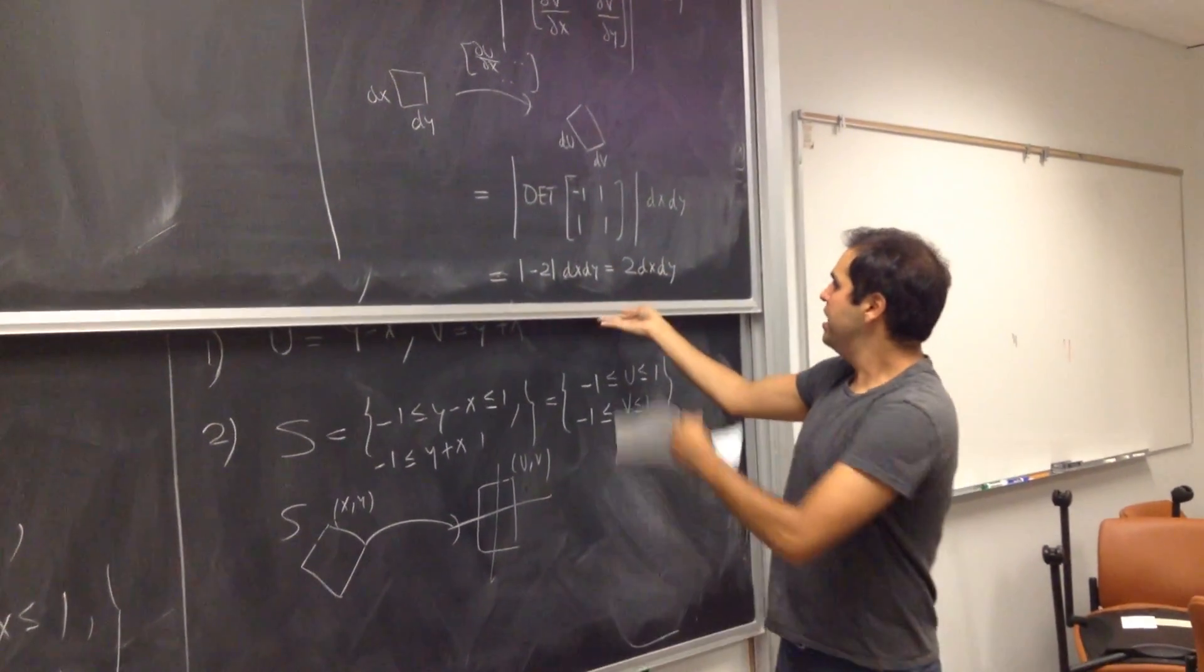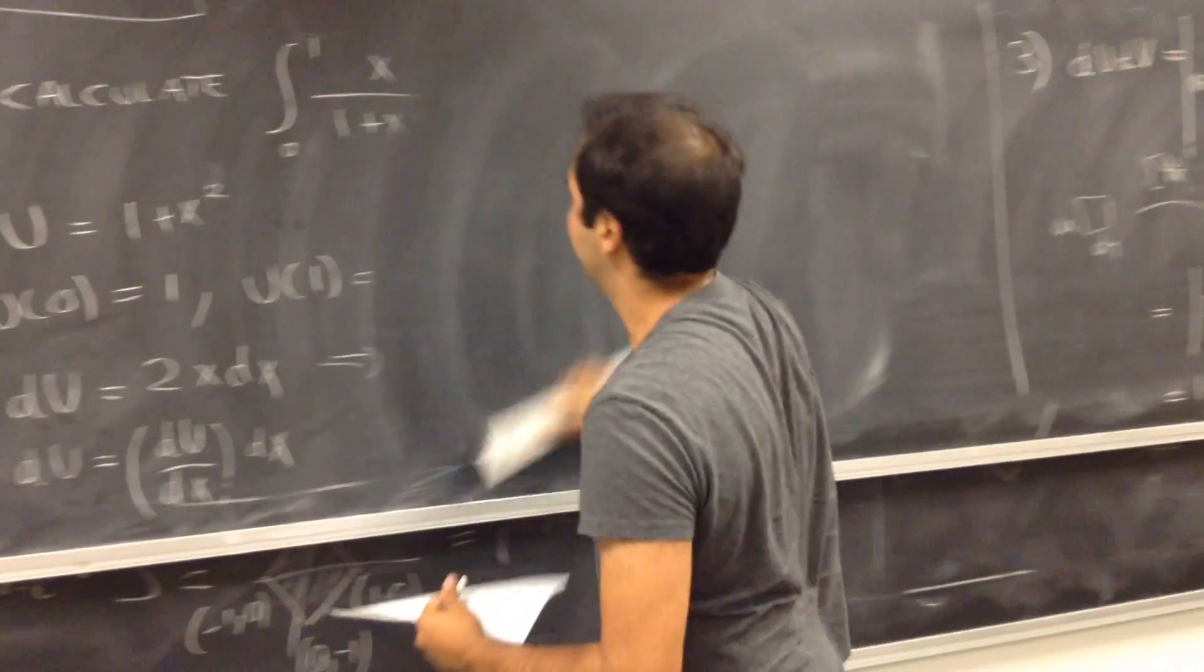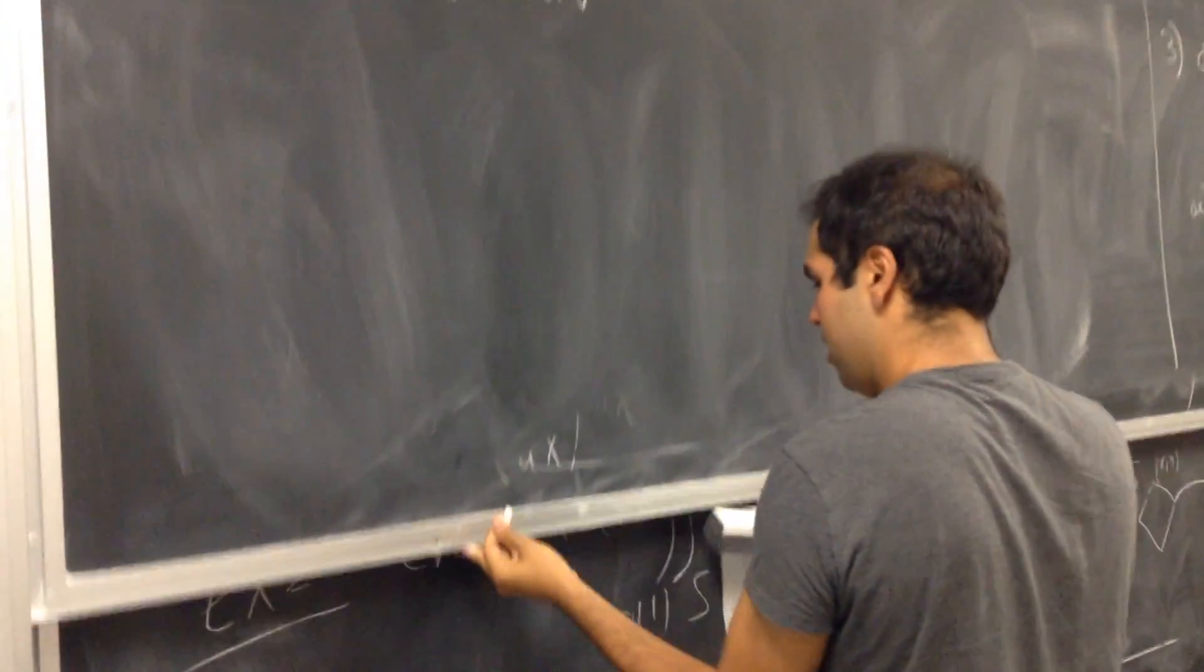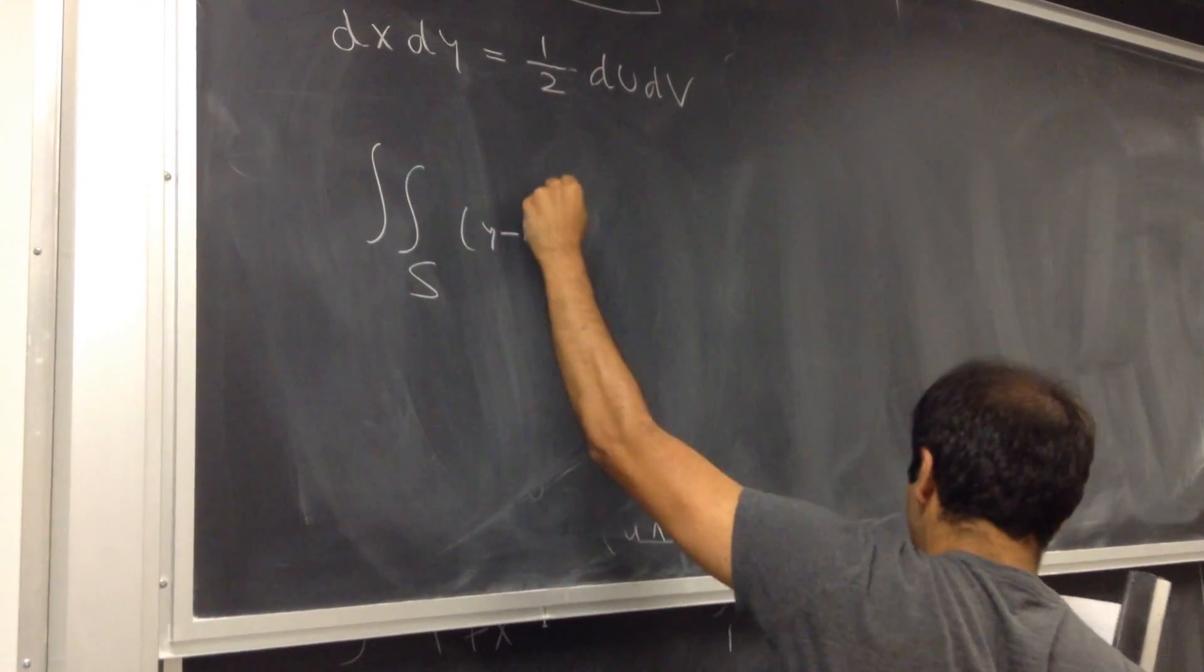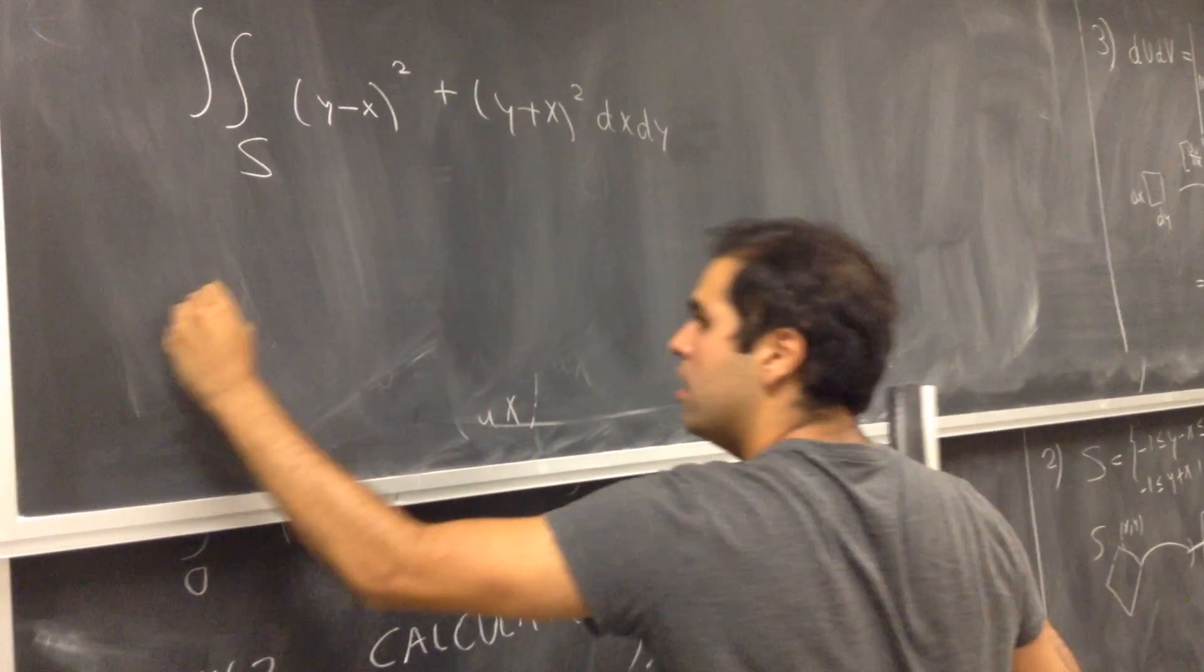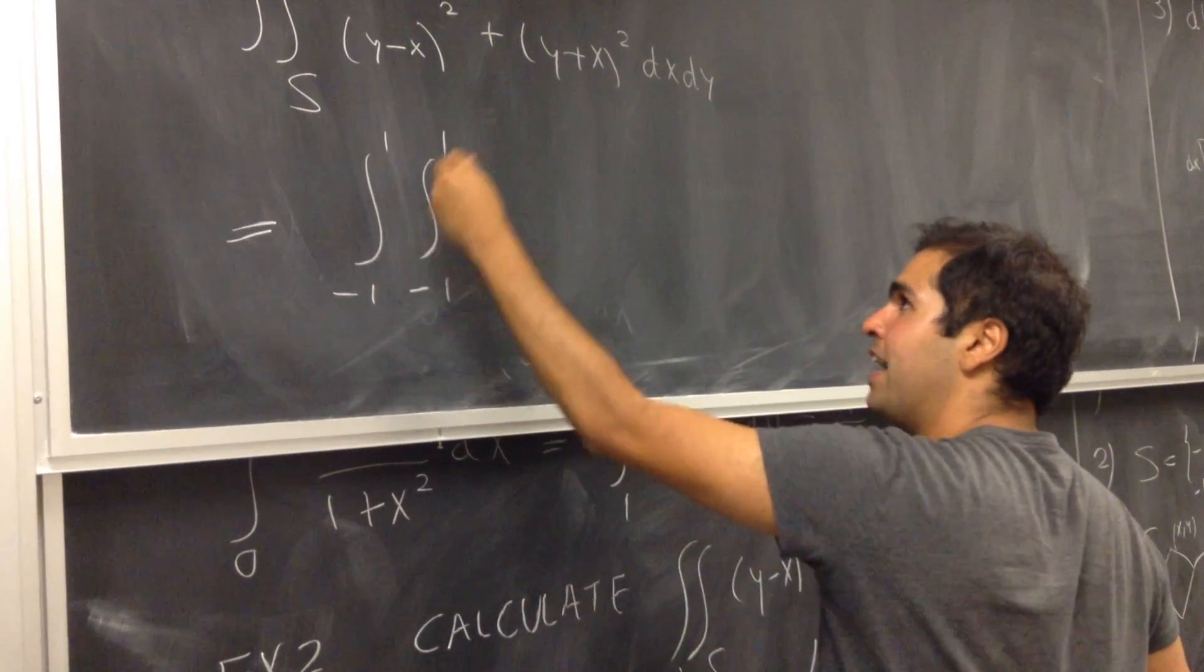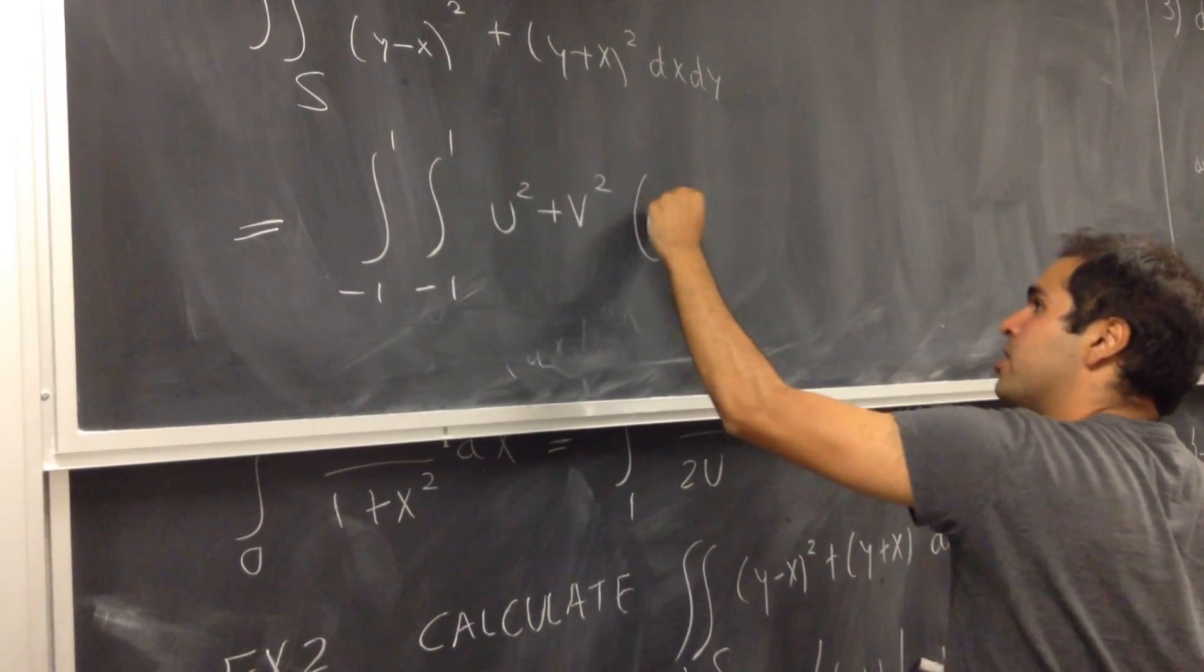So, du dv is 2 dx dy. And then, therefore, the original thing, dx dy is 1 half du dv. It's 1 half du dv. And then, let's look at our integral. Our integral now becomes, so double integral over x, y minus x squared, plus y plus x squared, dx dy becomes, now, the double integral over our new, straightened out square. So, integral from minus 1 to 1, integral from minus 1 to 1. This is u squared, plus v squared. This dx dy, which becomes 1 half du dv.